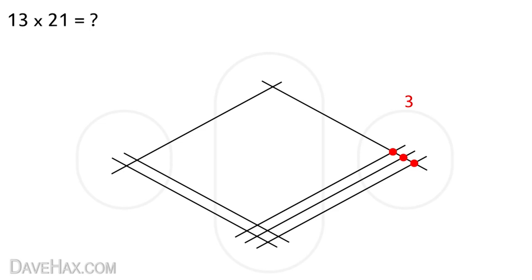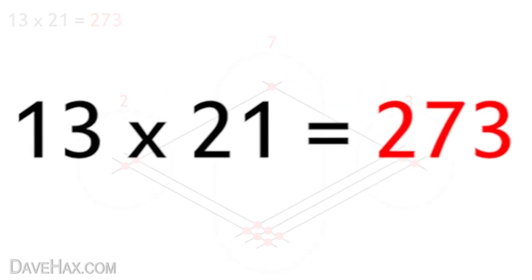So again we count how many times the lines cross: 1, 2, 3, 4, 5, 6, 7, and write it at the top. Then move on to the last zone and do exactly the same again: 1, 2, 2, and that gives us our answer. 13 times 21 is 273. Pretty cool, huh?